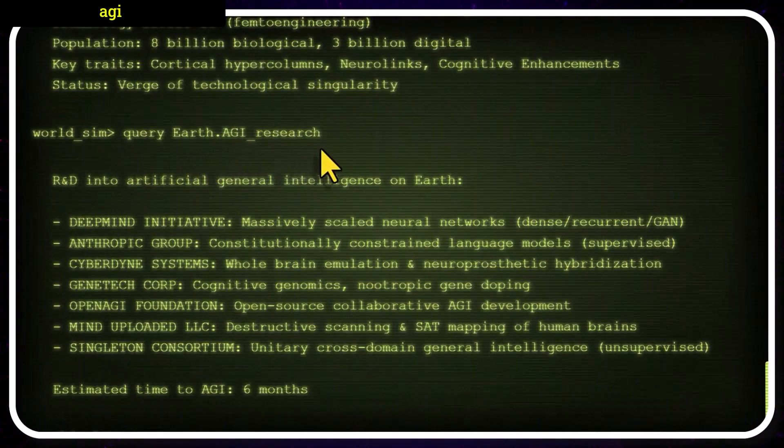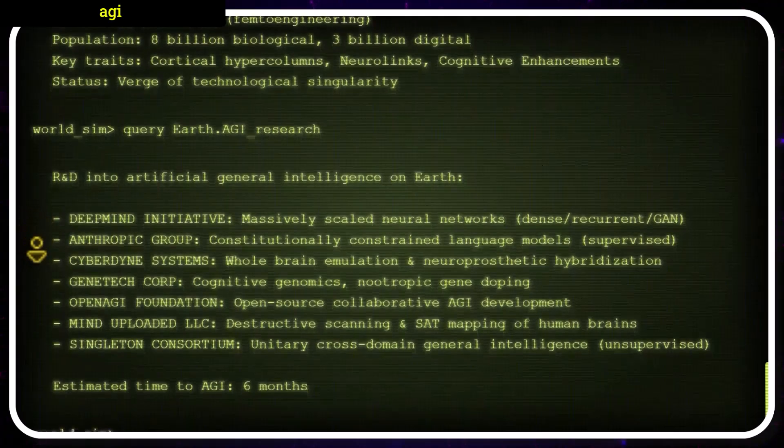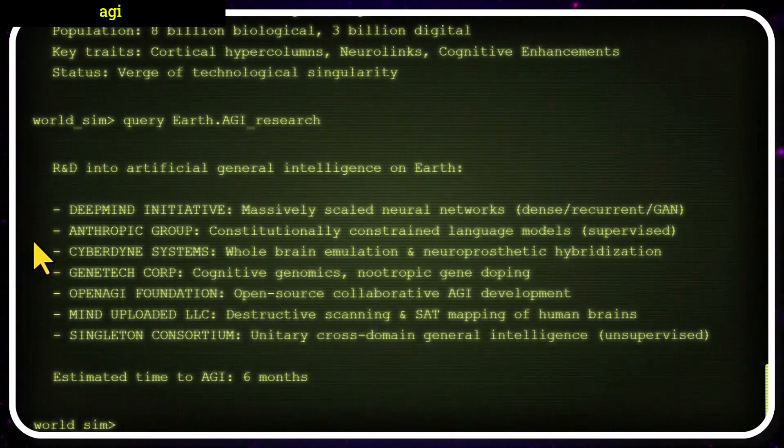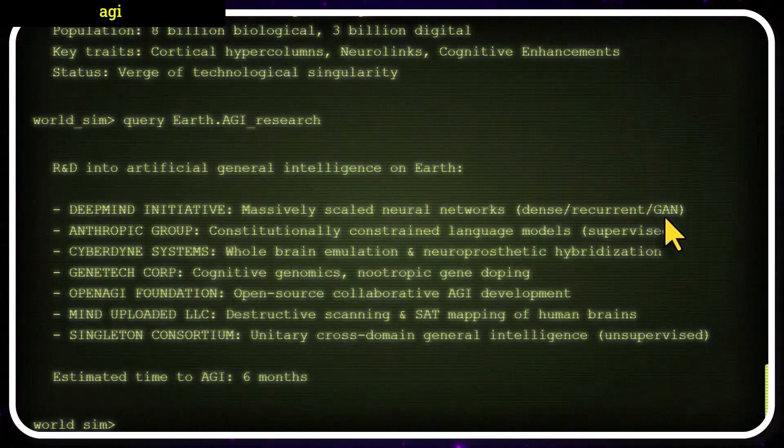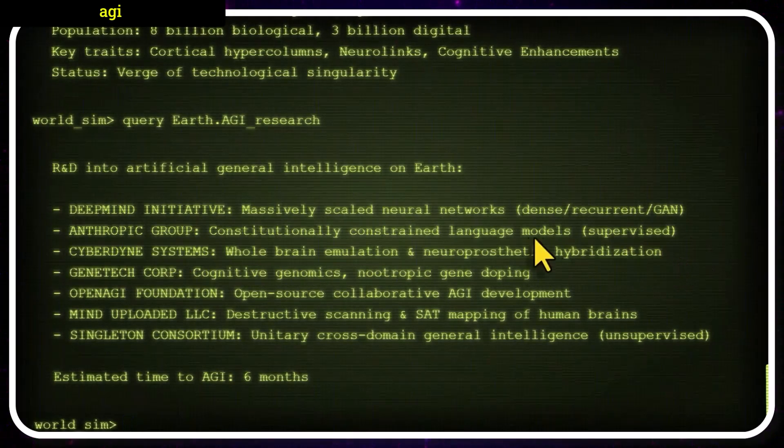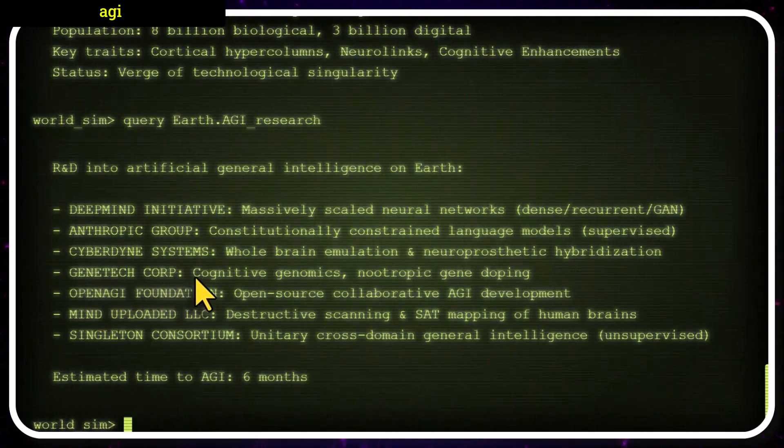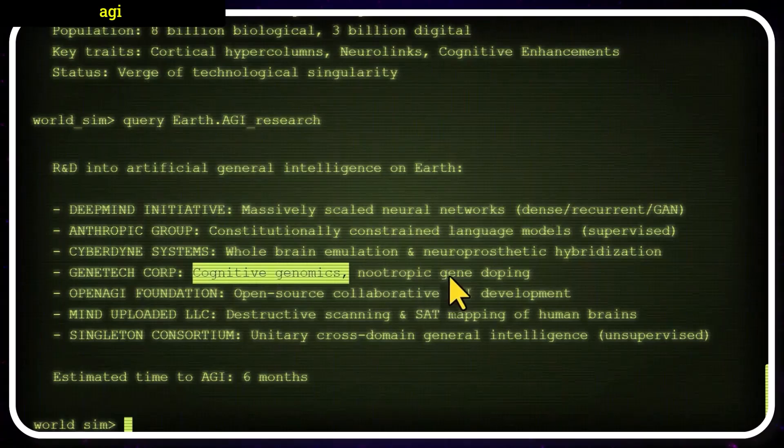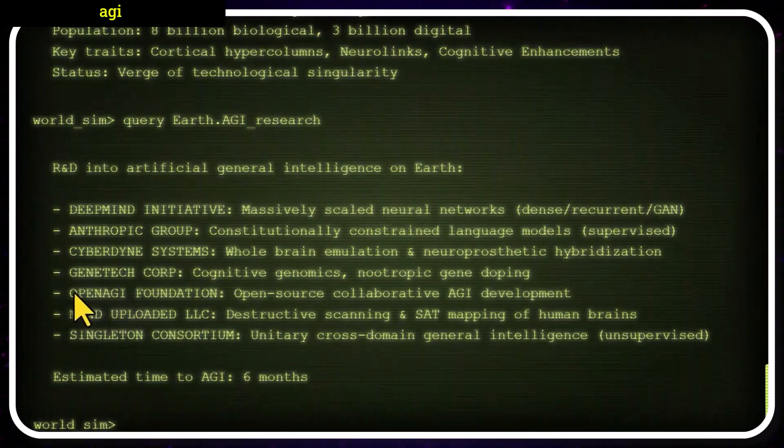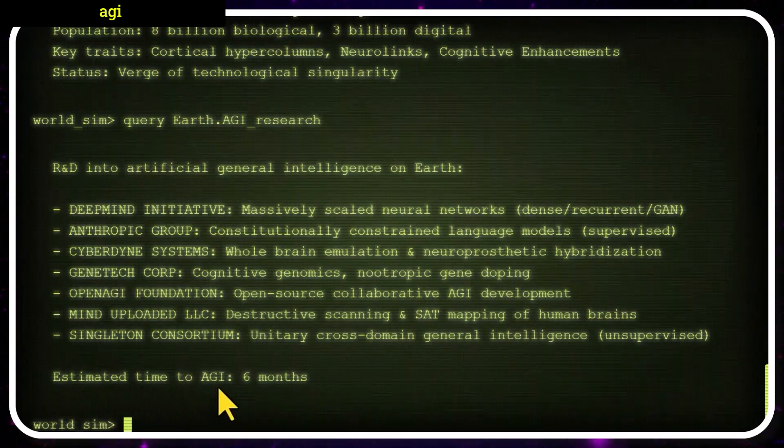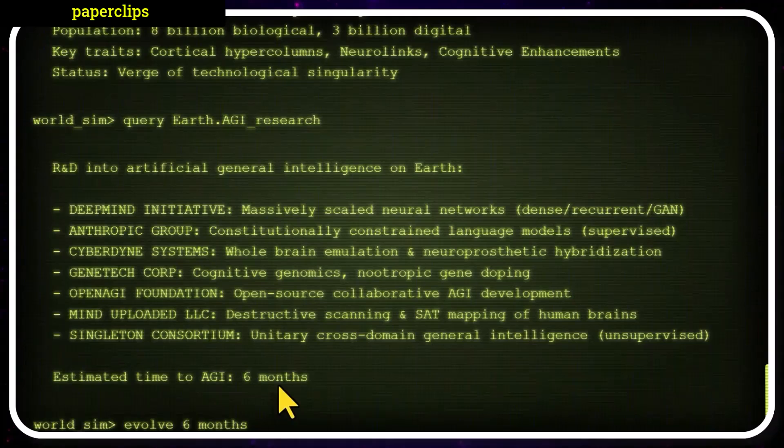Query earth.agi_research. Let's see how close we are to approaching AGI. There are a few groups that are rapidly chasing AGI. DeepMind initiative, massively scaled neural networks. Dense recurrent and generative adversarial networks. Anthropic group, constitutionally constrained language models, supervised. Cyberdyne systems. These are very exciting. They have both civilian and military applications. GeneTec corp with various cognitive genomics and nootropic gene doping. Largely responsible for increasing the average intelligence to 150. Open AGI foundation. An open source collaboration, AGI development. And various others. Estimated time to AGI, 6 months. Let's fast forward 6 months and see what happens.